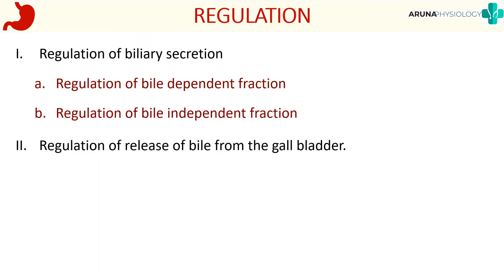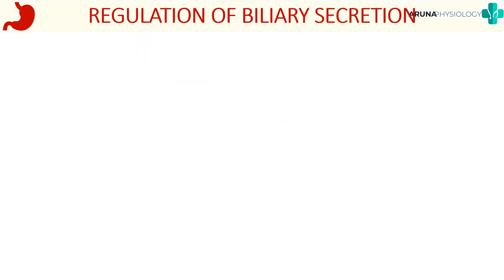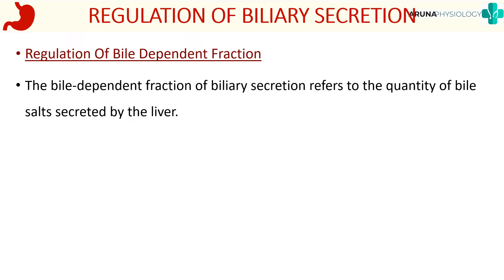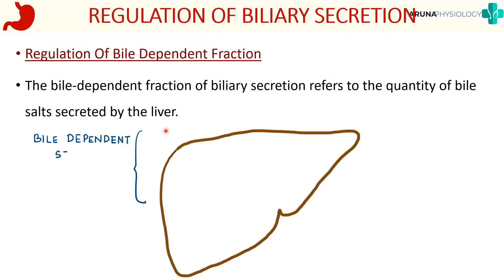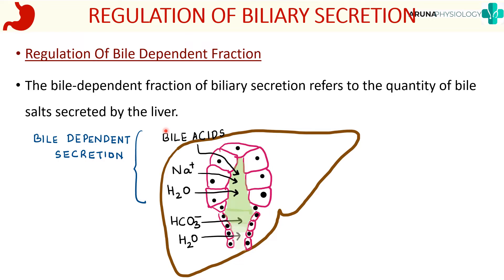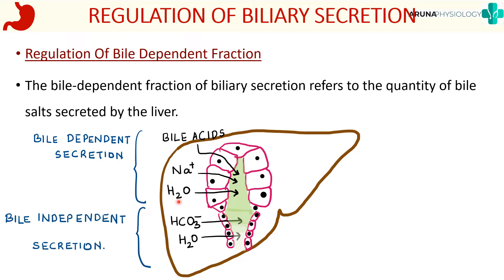Regulation of bile dependent fraction refers to the quantity of bile salts secreted by the liver. When the liver produces bile, it produces it from bile salts and bile pigments. Initially the liver parenchymal cells produce bile, but later it is modified by the ductile cells, making it more alkaline and watery by adding bicarbonate and water. This initial part produced by the liver parenchymal cells is the bile dependent fraction, and the modification by the ducts is the bile independent fraction.